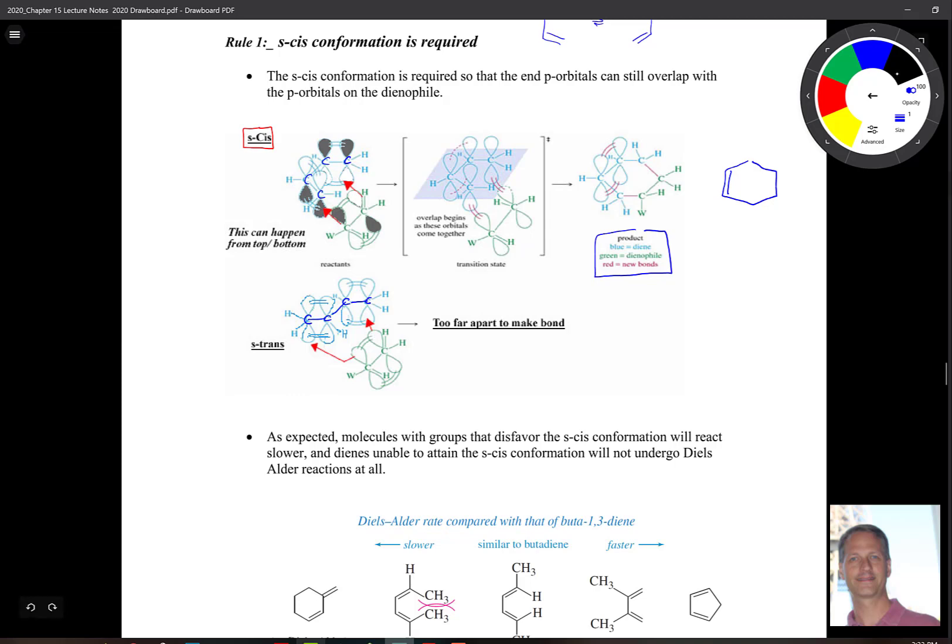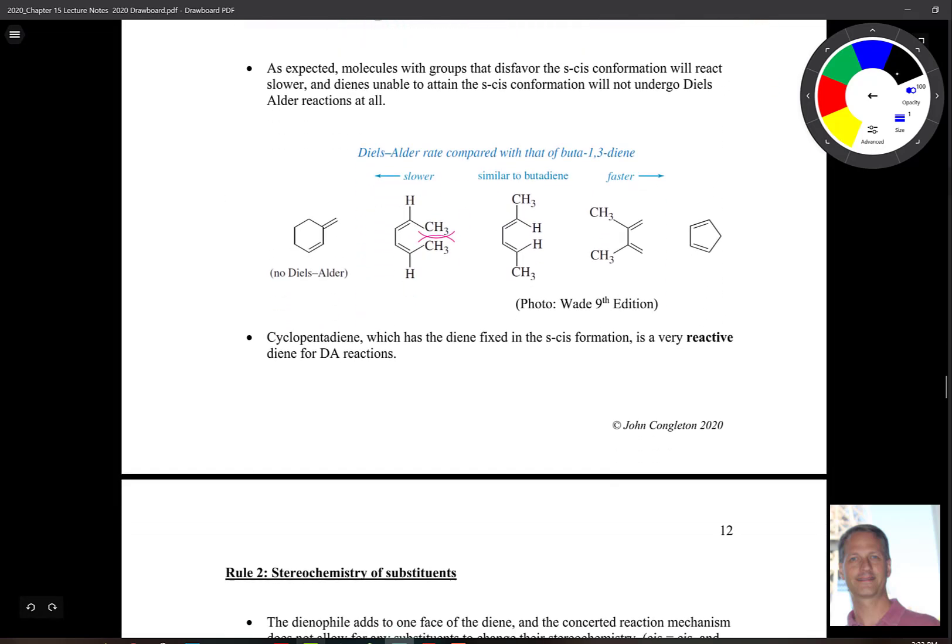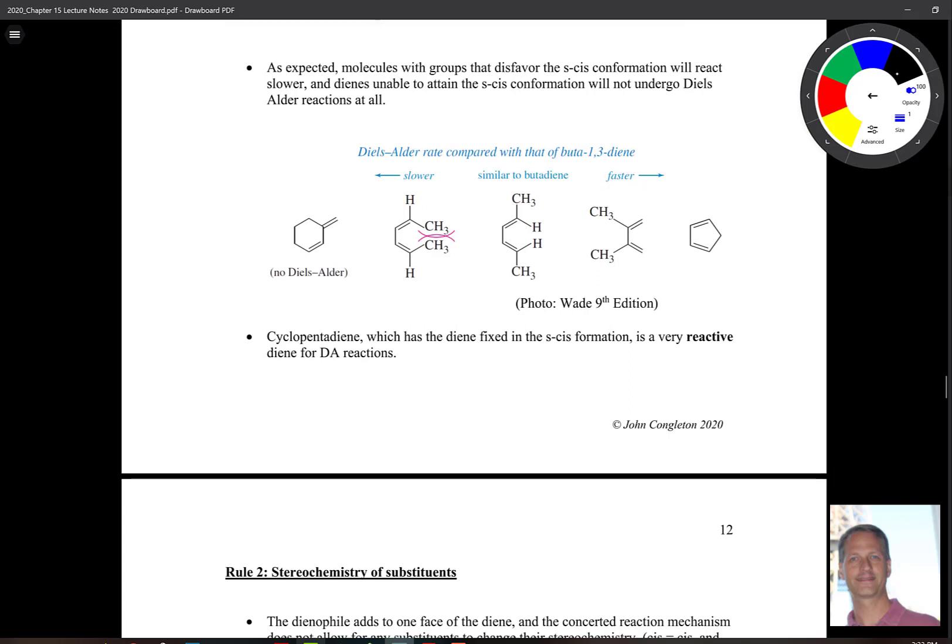As you might expect, molecules that lock yourself in to being S cis are very reactive. Because S cis is the geometry required. So down here, at the end, here we have cyclopentadiene. Sometimes we call this CPD. That's very reactive. In fact, it's so reactive that it reacts with itself to form something called dicyclopentadiene. And then on the other end of the spectrum, this does not allow for S cis because you're locked in S trans. So there's no Diels-Alder for that molecule on the far left.